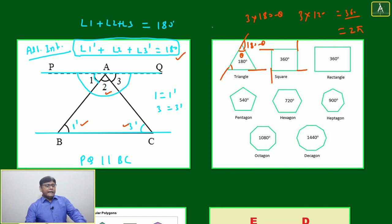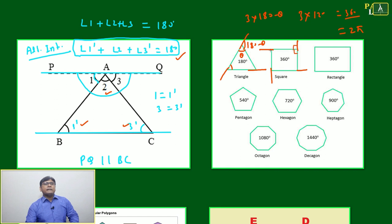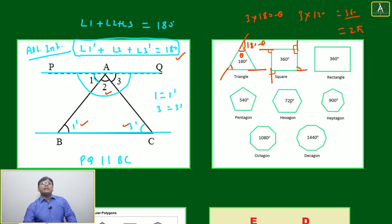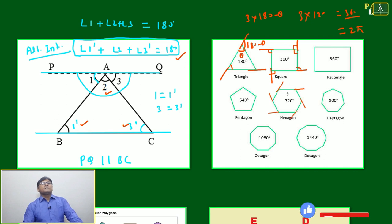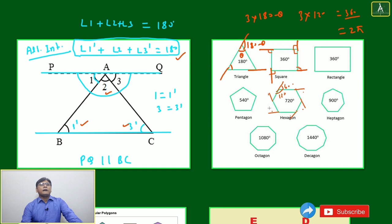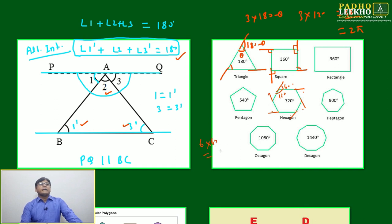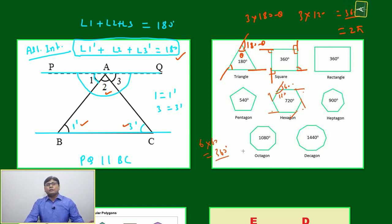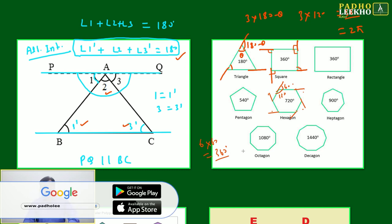This holds for any figure. For a square, each interior angle is 90°, so each exterior angle is 90°, and 4 × 90° = 360° = 2π. For a regular hexagon, each interior angle is 120°, so each exterior angle is 60°, and 6 × 60° = 360° = 2π. For any convex polygon, the sum of total exterior angles is fixed at 2π.